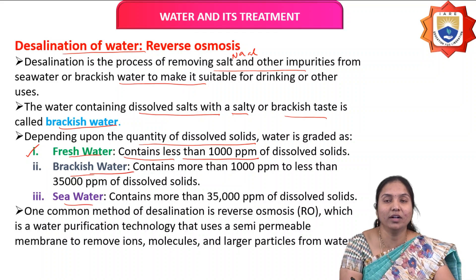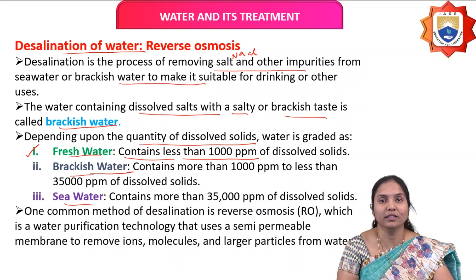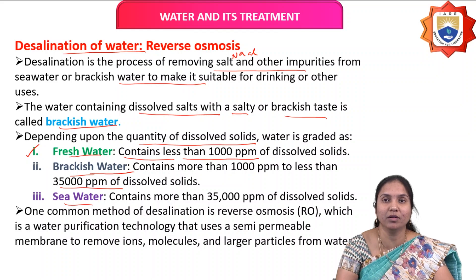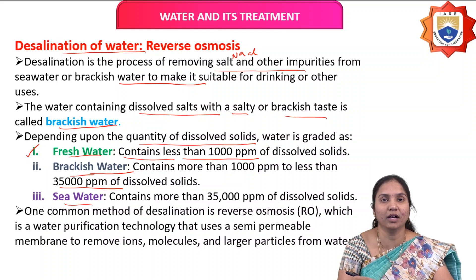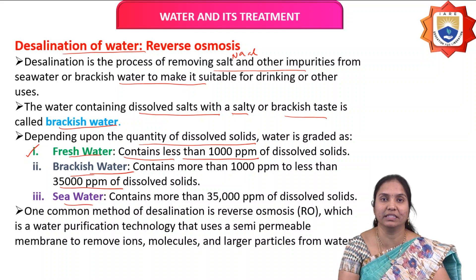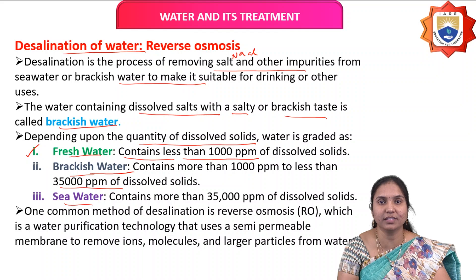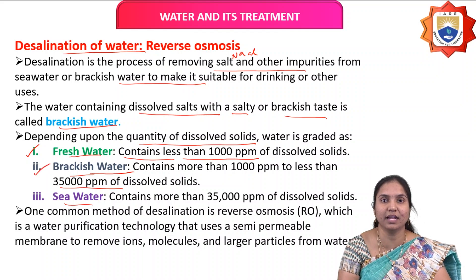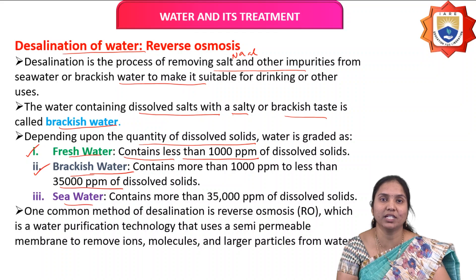If water contains more than 1000 ppm and less than 35,000 ppm of dissolved solids, that water is considered brackish water.